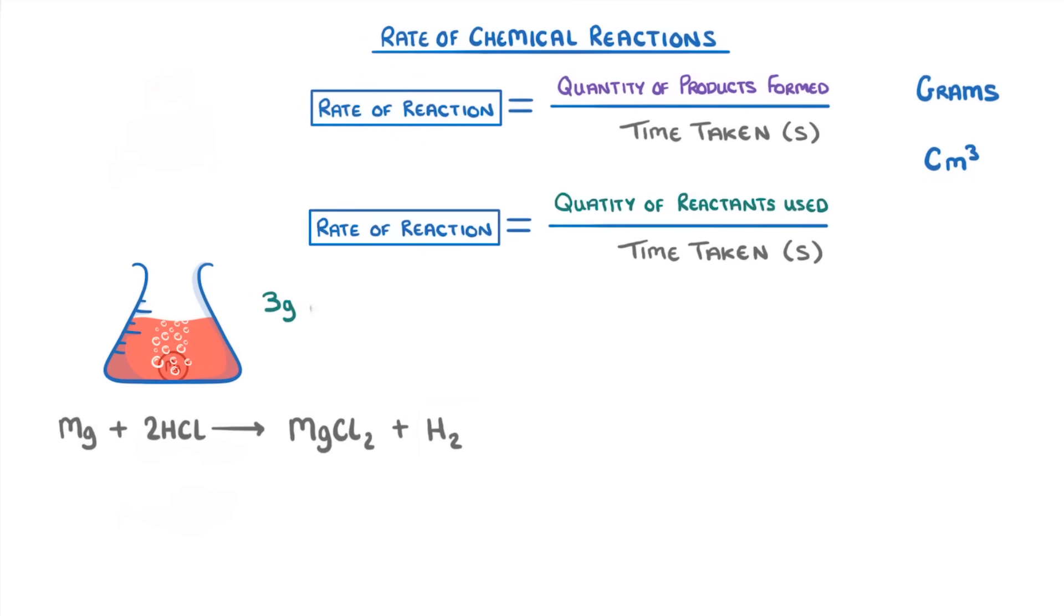Alternatively, if we had used 3 grams of magnesium and were told that it took 4 minutes to disappear completely and get used up, then we could use the other equation and do 3 grams divided by 4 times 60, so 240 seconds, which gives us 0.0125 grams per second.